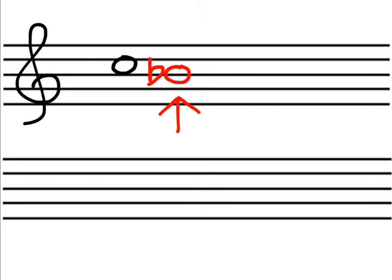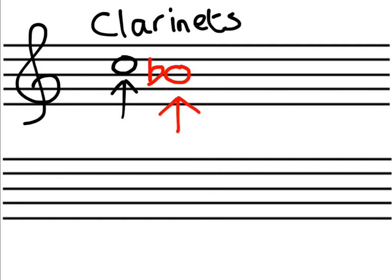So for any instruments in B-flat, like clarinets in B-flat, what is written down in front of you in the music — you will have to transpose that music down a major second in order to hear what that instrument will actually sound like. That applies to all instruments in B-flat. Probably the most common are clarinets in B-flat. So remember: transpose what is written in the music down a major second in order to find its concert pitch, in order to find how it sounds.